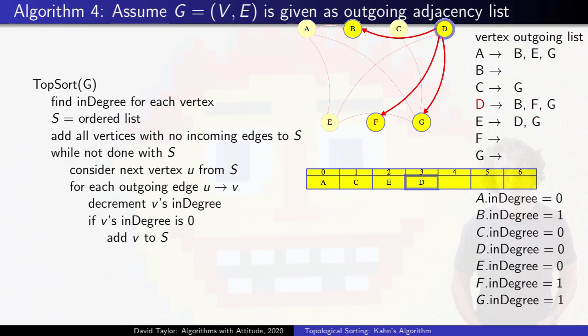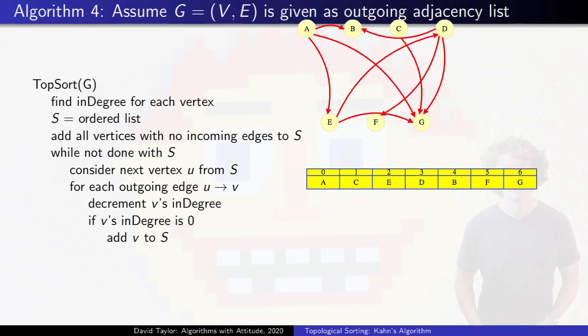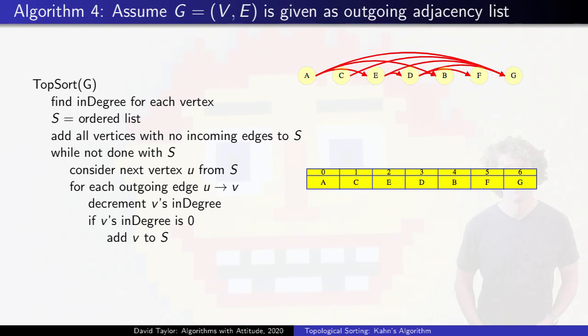D ends up decrementing B, F, G, adding all of them to the queue. These vertices don't have any outgoing edges, so we run through them and finish the list. If we rearrange the vertices to be in topological order, we see that all edges point to the right.